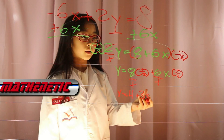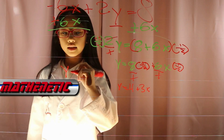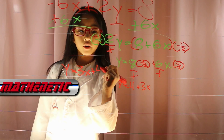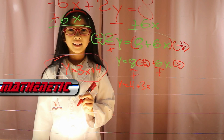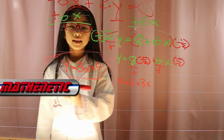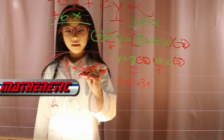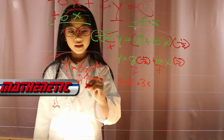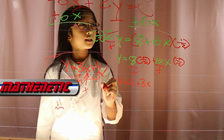That doesn't quite look like y-intercept form, so you need to switch the 3x with the 4. y equals 3x plus 4. This is the y-intercept form, like y equals mx plus b. The 3 represents m, the x represents x, and the 4 represents b.